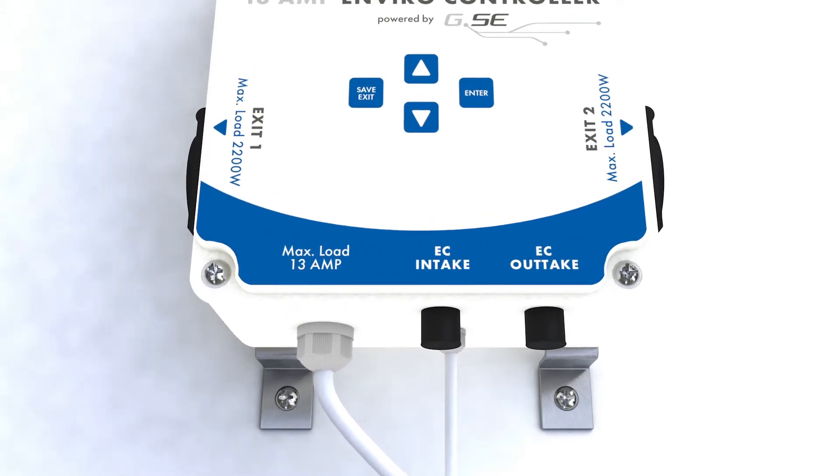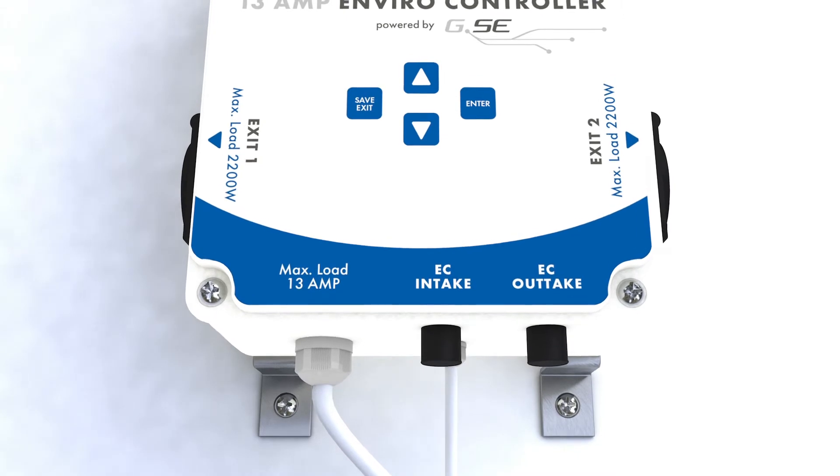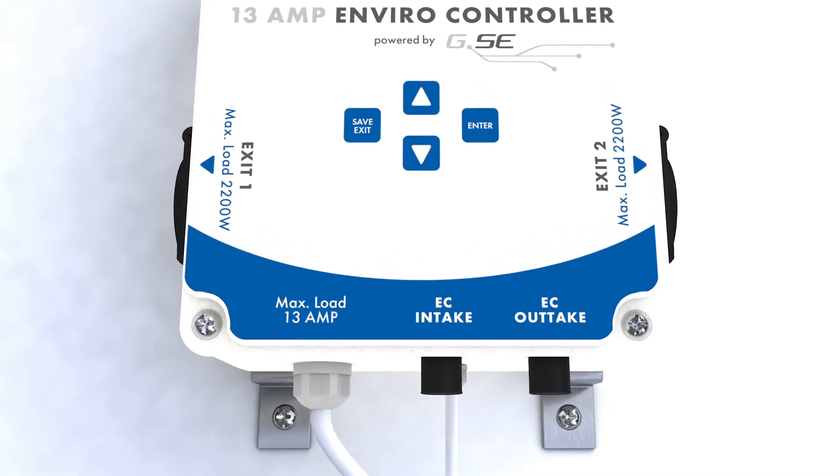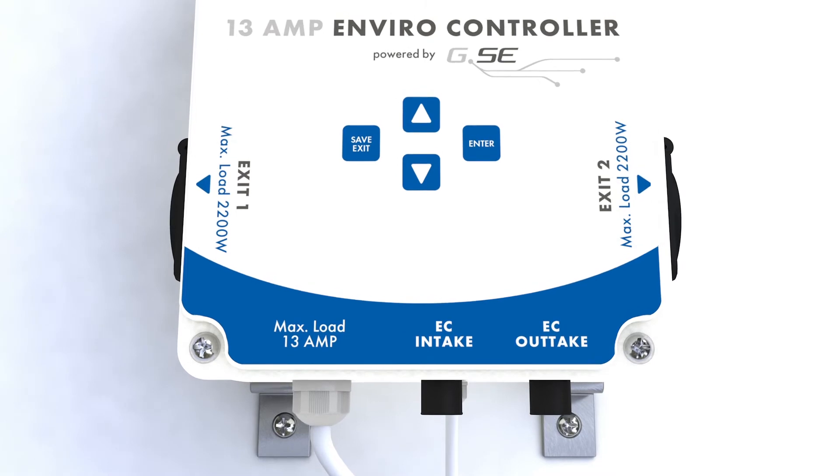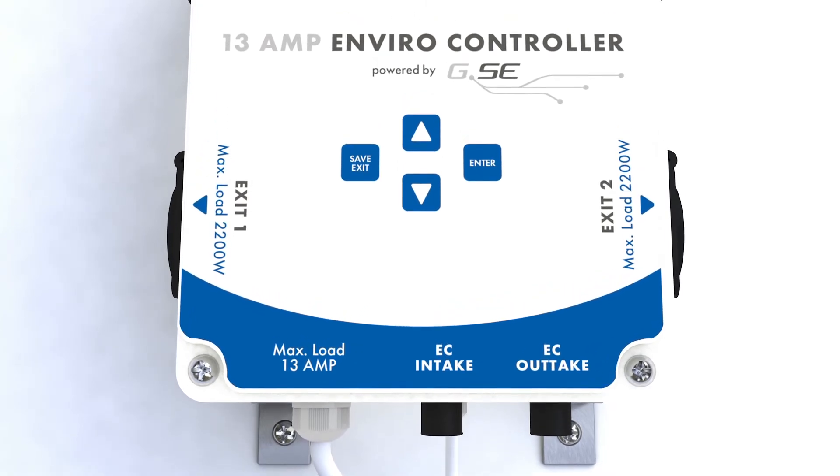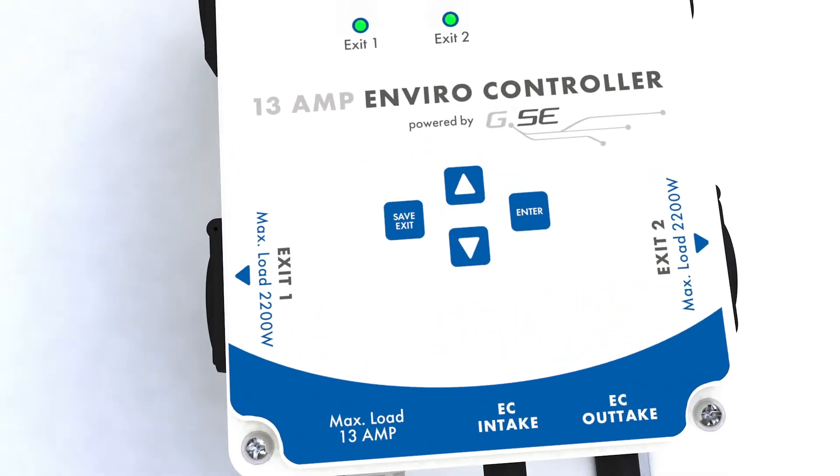This enables you to control both AC and EC technologies at the same time. As well as controlling your fans, the EnviroController comes with two extra programmable sockets, exit 1 and exit 2.